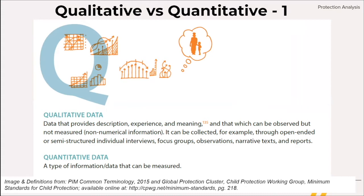For example, the resilience mechanism of a community. On the other hand, quantitative data are defined as a type of information or data that can be measured — for example, the number of children not attending school.